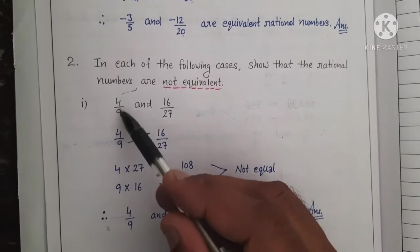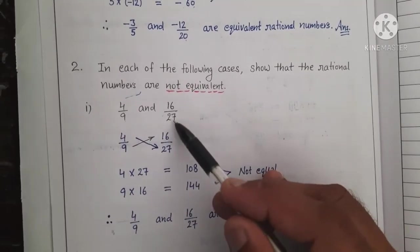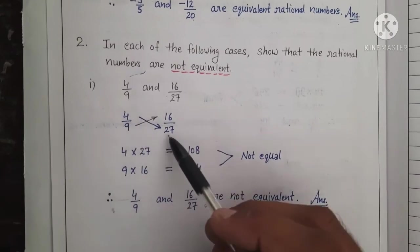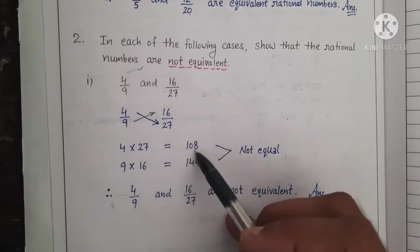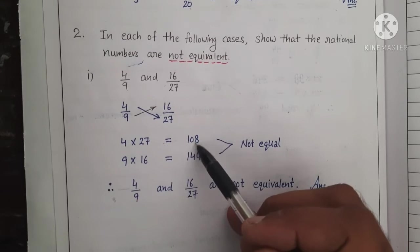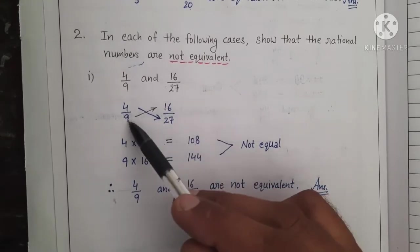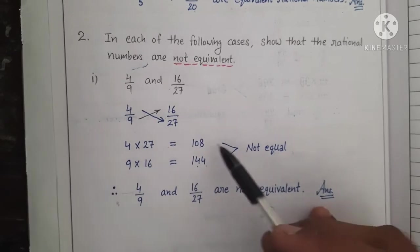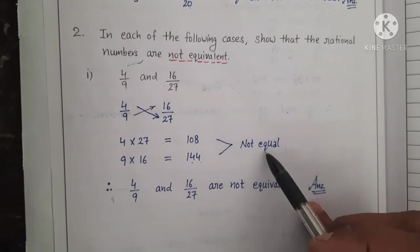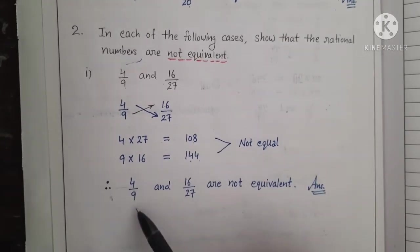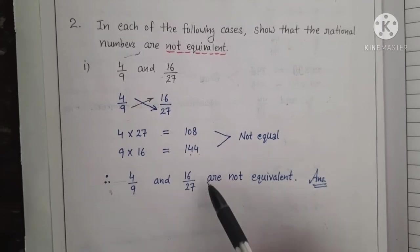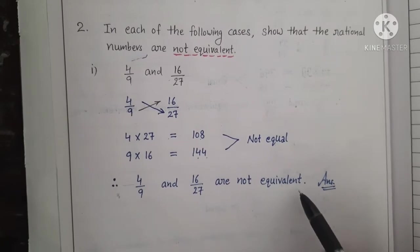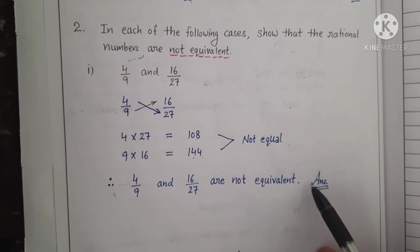First part: 4 upon 9 and 16 upon 27. Cross product karenge 4 ko 27 ke saath — jab multiply karte hain to 108 answer rahega. Similarly, 16 ko jab 9 se product karenge — 16×9 = 144. Both values are not equal. Therefore, 4 upon 9 and 16 upon 27 are not equivalent. That is the required answer.